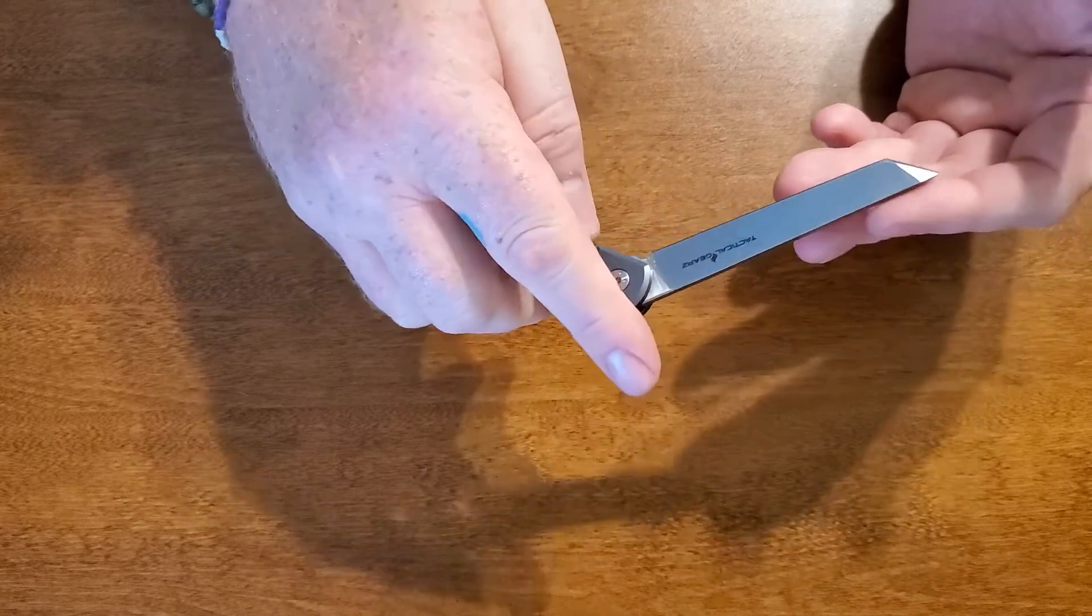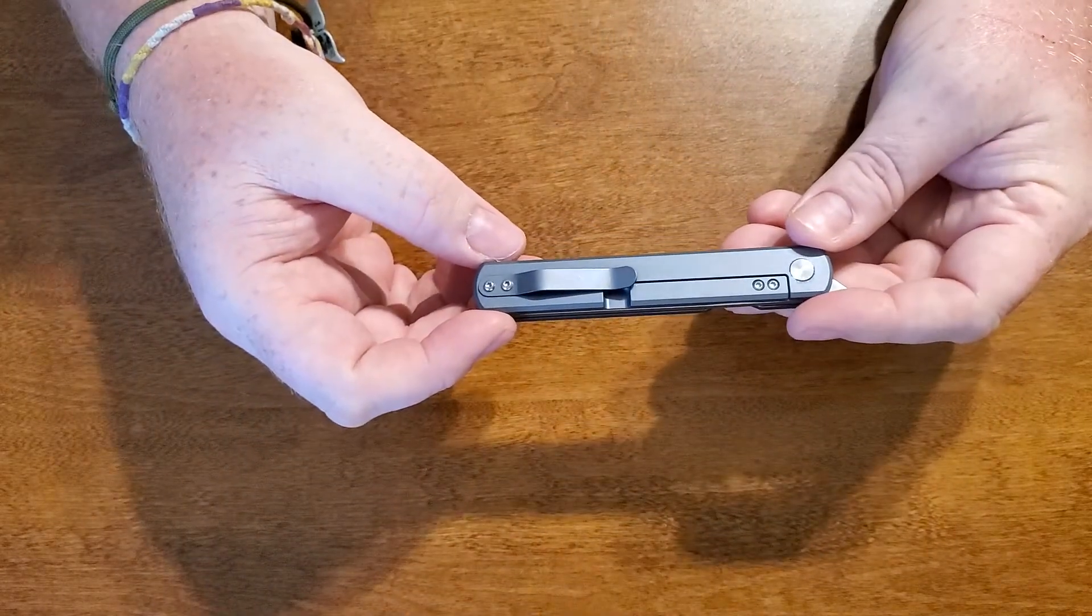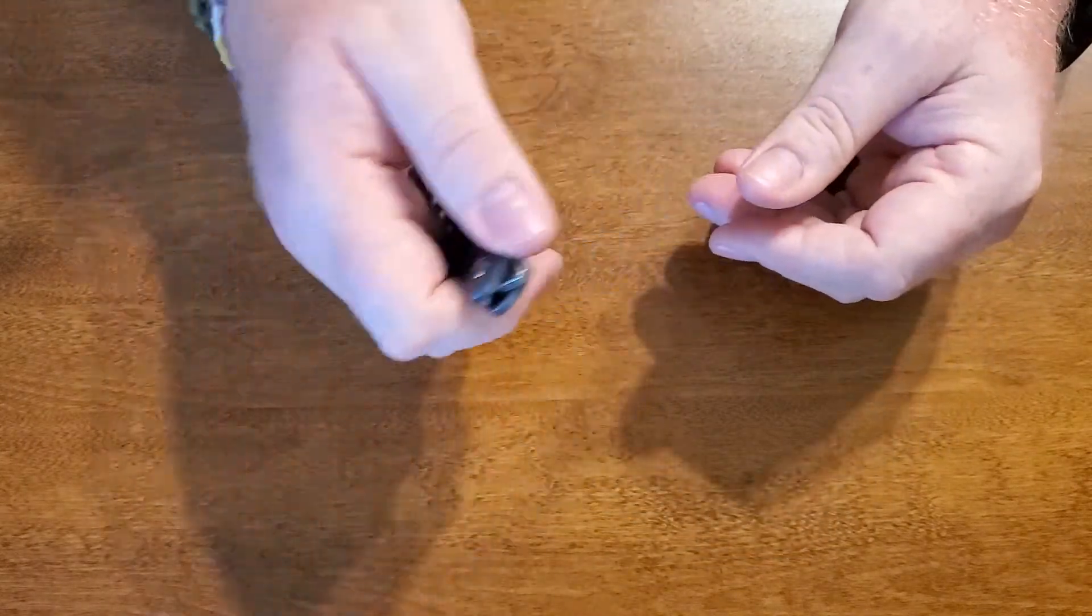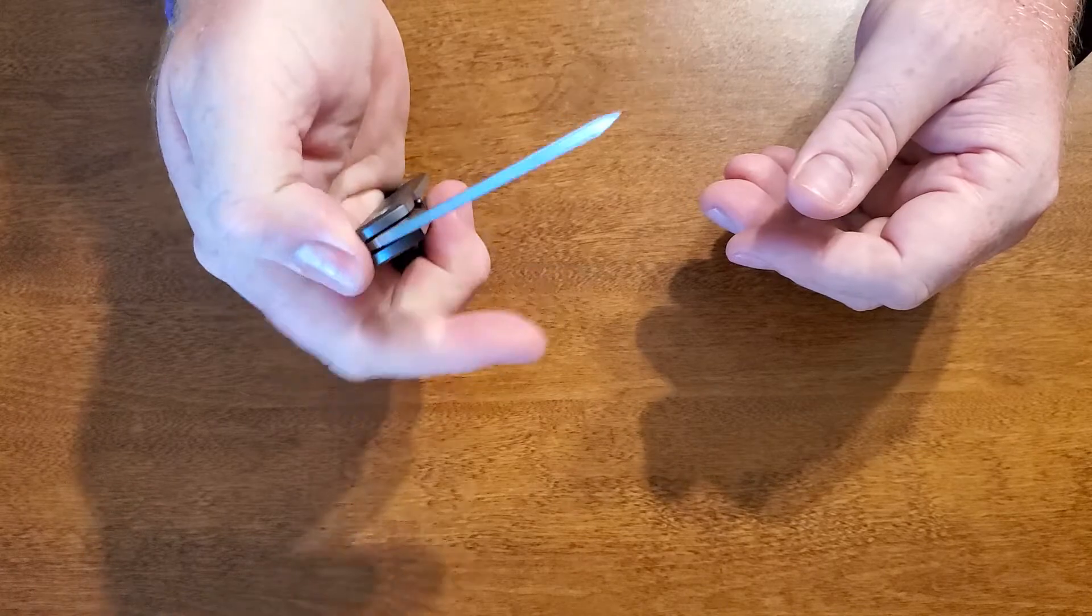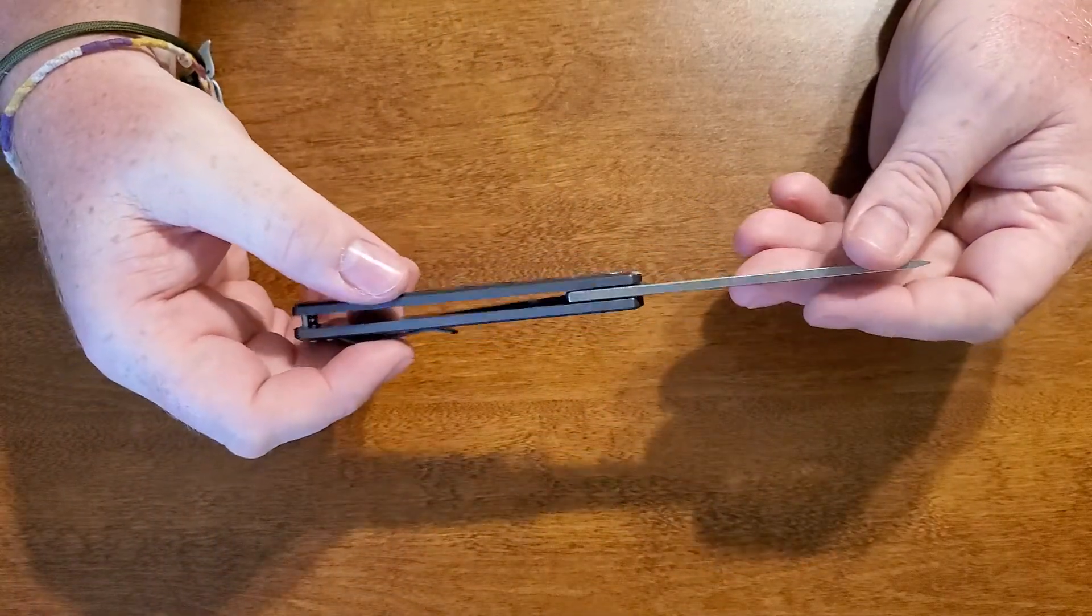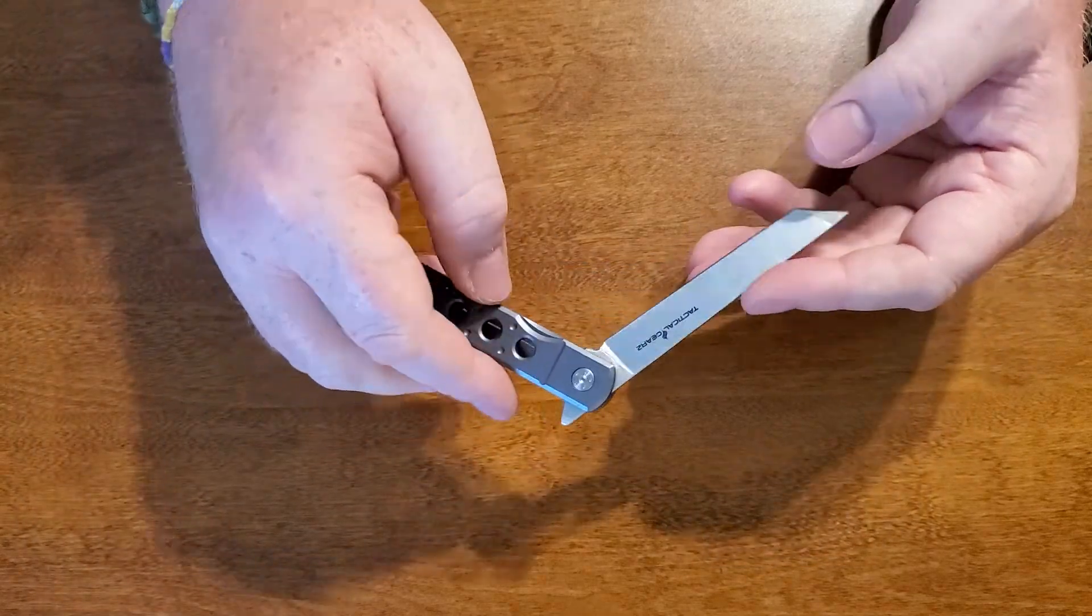Alpha beta titanium alloy, high strength to weight ratio. You know, they, that insinuates that it's a lightweight or lighter weight. Which kind of, maybe for a titanium, it is lighter weight. I don't know, but again, it's got some weight to it.